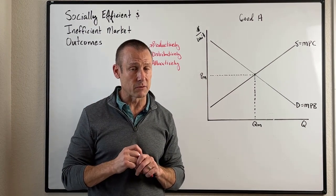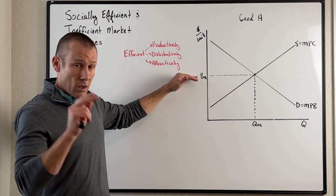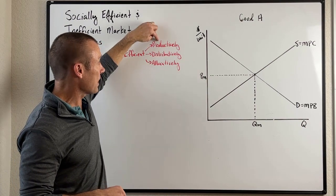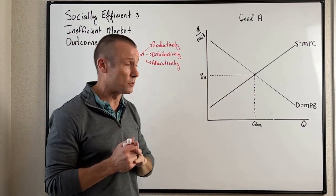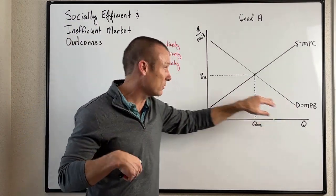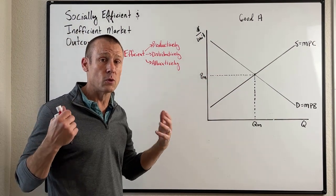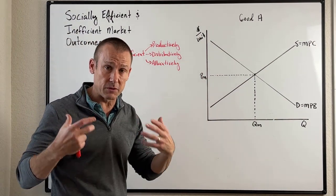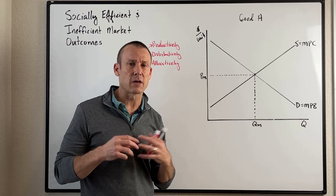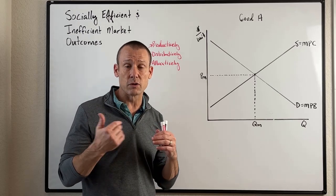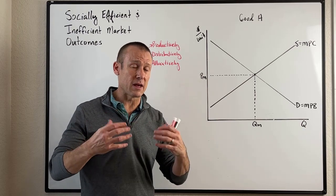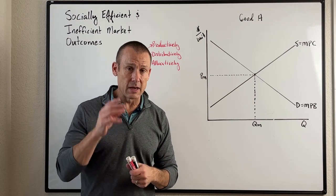Price coordinating economic activity does a pretty good job of creating productive efficiency — only the lowest cost producers produce. It does an okay job of distributing goods to those who benefit the most, besides the income inequality issue with demand being based on willingness and ability. Allocative efficiency often comes down to other types of market failures: market power results in under-production, and then we have externalities. So let's bring in an externality.